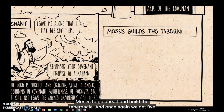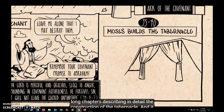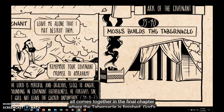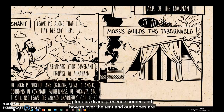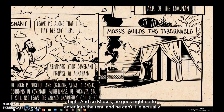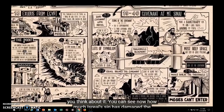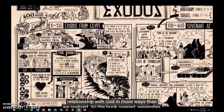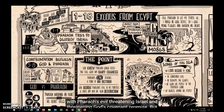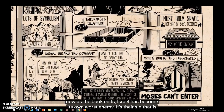After renewing the covenant with Israel, God commissions Moses to build the tabernacle. Five long chapters describe in detail its construction, all coming together in the final chapter where the tabernacle is finished. God's glorious divine presence comes and hovers over the tent, and hopes are high. Moses goes to enter the tent — and he can't. He actually cannot go in, and that's how the book ends. Israel's sin has damaged the relationship with God more than we realize. The book opened with Pharaoh's evil threatening Israel and God's covenant promise, but as it ends, Israel has become its own worst enemy — it is their sin threatening the future of the covenant.